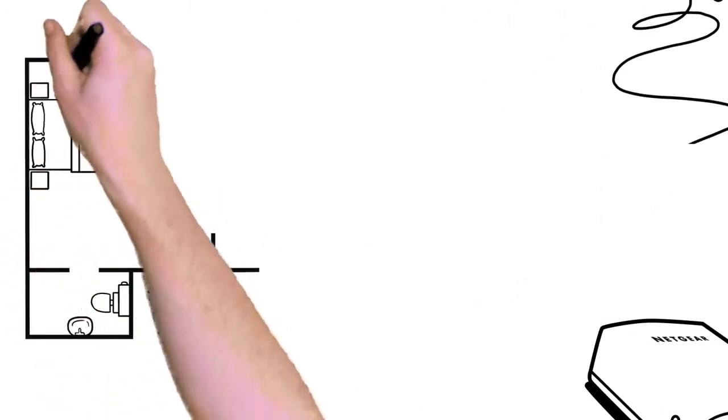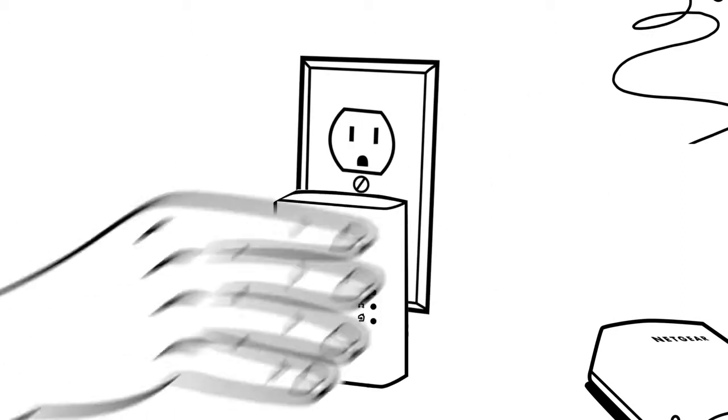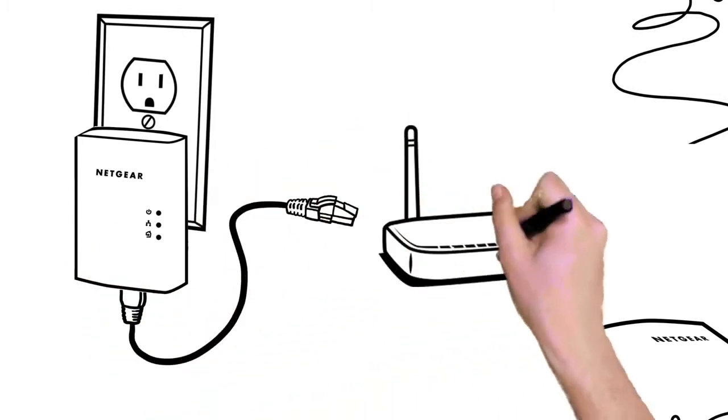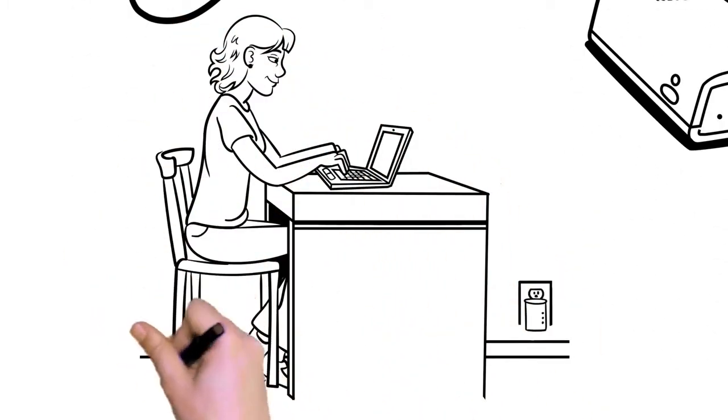Powerline adapters use your home's electrical wiring to create a seamless, wired, or Wi-Fi network anywhere. Just plug a Powerline adapter into any outlet and connect it to your existing Wi-Fi router, then plug the second Powerline adapter into an outlet in any room to create an extended Internet connection.